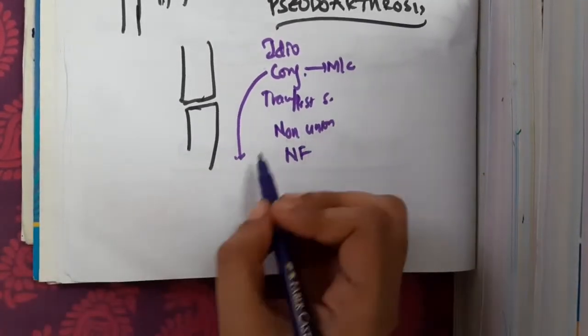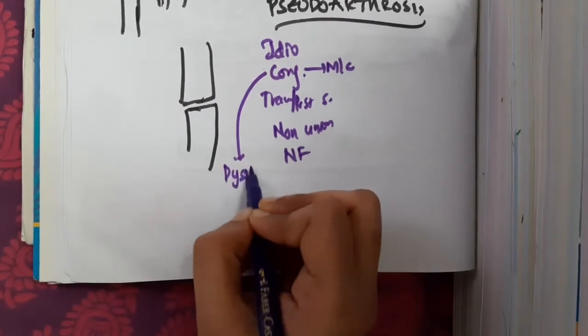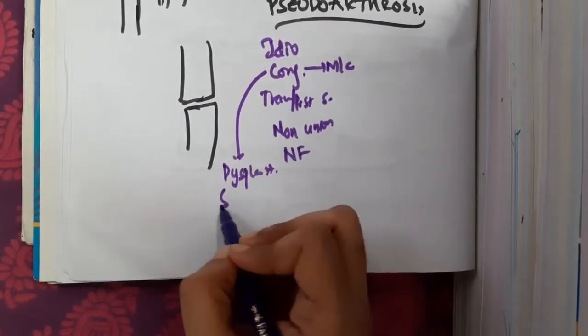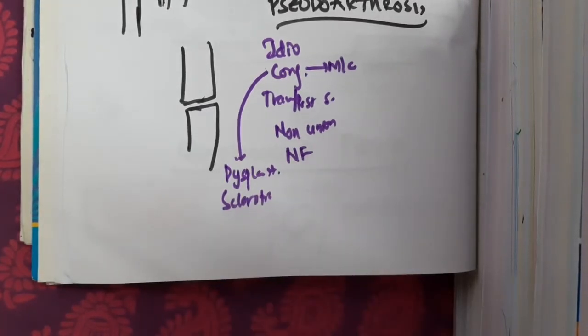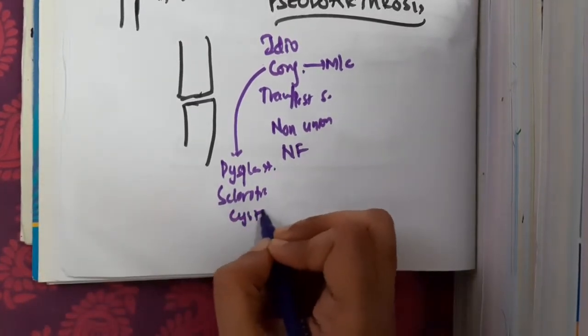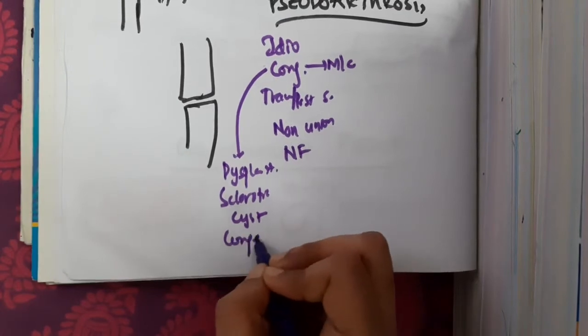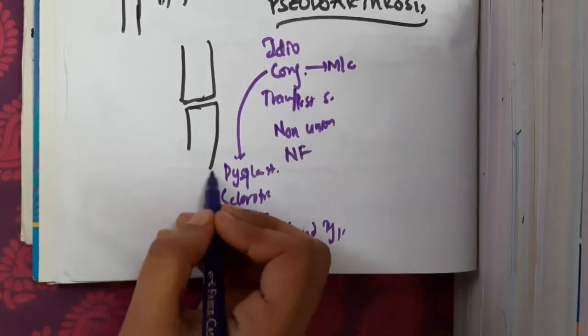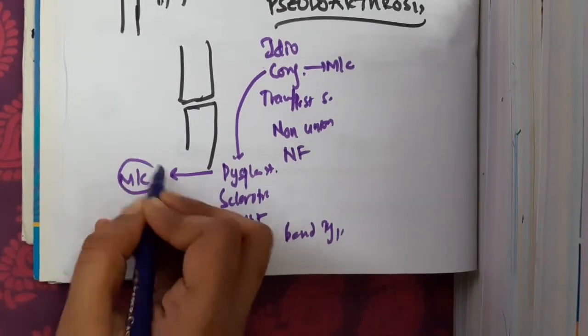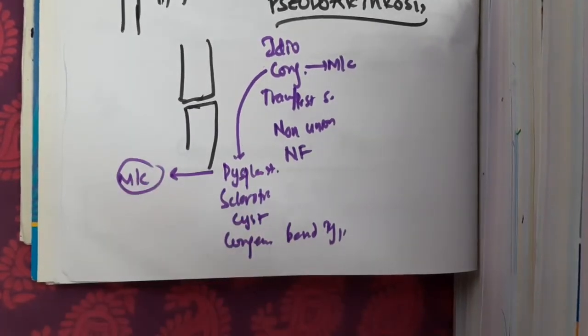Congenital pseudoarthrosis again has different types: dysplastic, sclerotic, cystic, or band type. Among all these, dysplastic congenital pseudoarthrosis is the most common defective site.